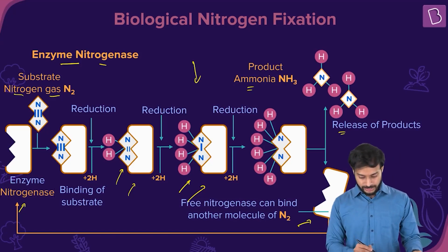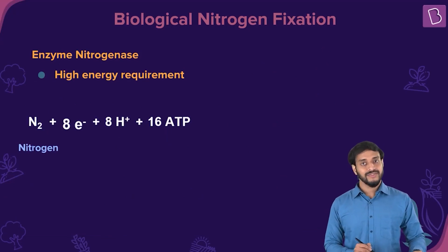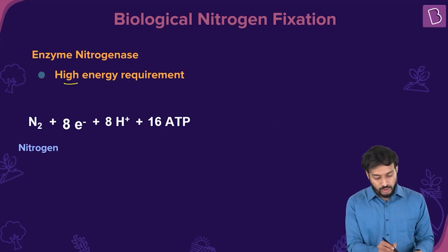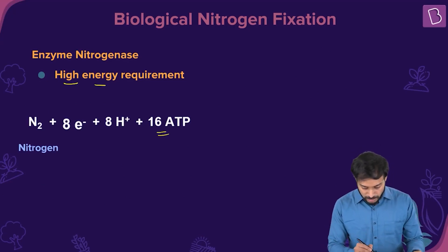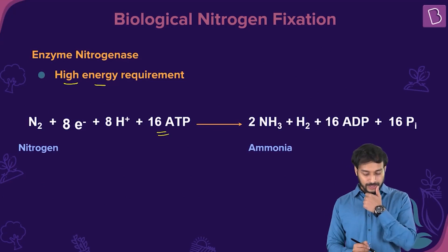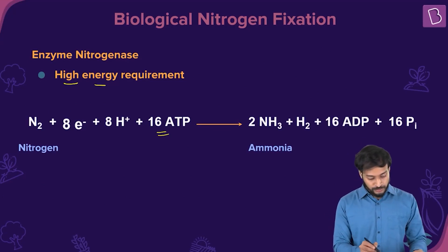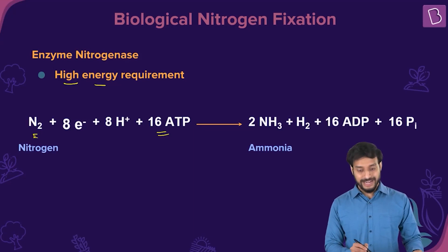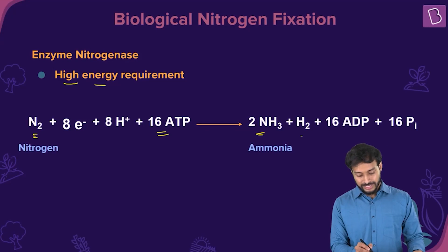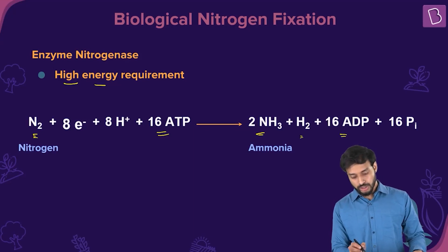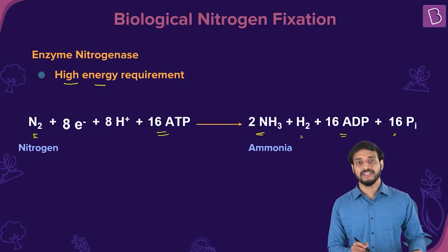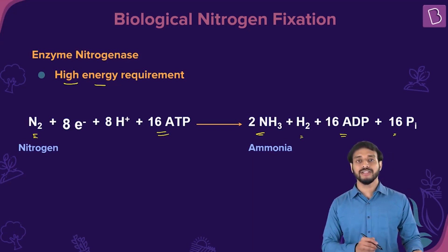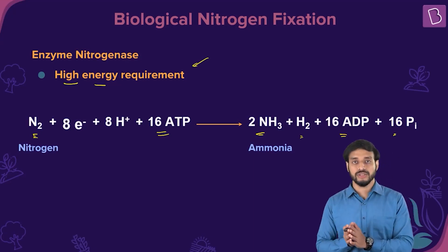This is a very energy-intensive process. 16 ATP molecules are used to convert one N2 into two molecules of ammonia. In addition, H2 is released, along with 16 ADP molecules and 16 inorganic phosphate (Pi) — making this a high energy requirement process.